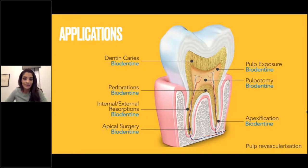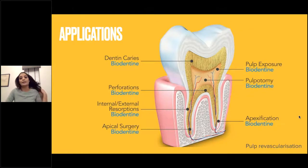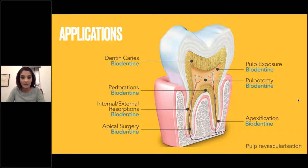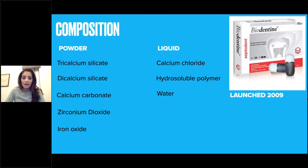Moving on to the applications of Biodentine. It can be used for many things: replacement of tooth tissue or dentine removed by caries, perforation repairs, repair of resorption, retrofilling when doing apical surgery, mending pulp exposures, pulpotomy procedures, and apexification and revascularization. Biodentine was launched in 2009, so it's very well established in the marketplace with a lot of supporting evidence. I've tried to reference the articles I'm using, placed at the bottom of each slide.